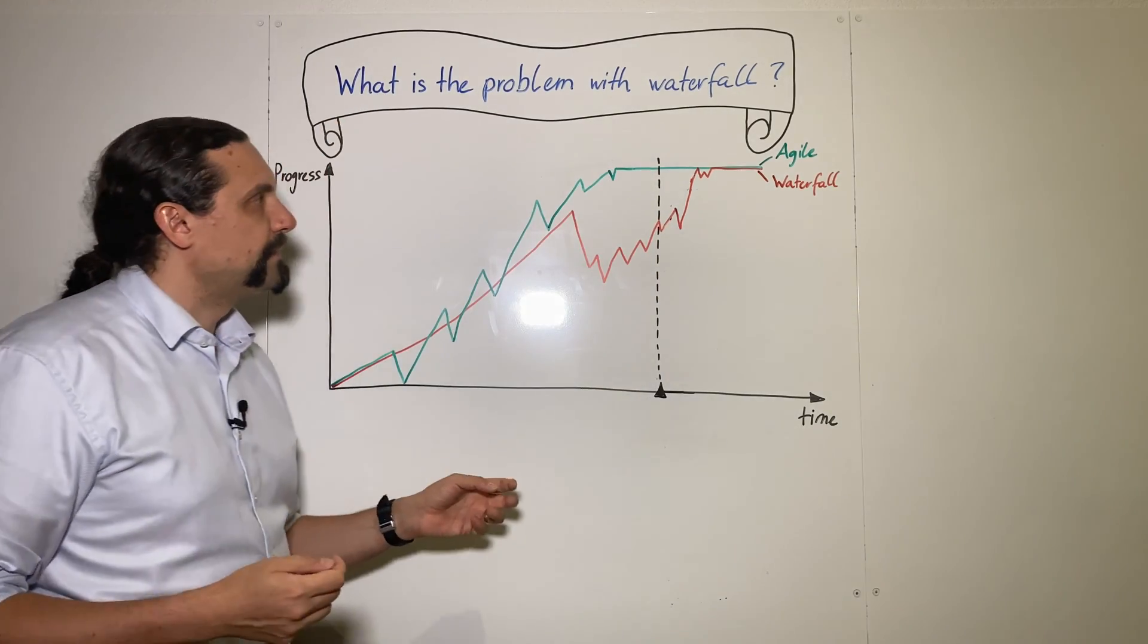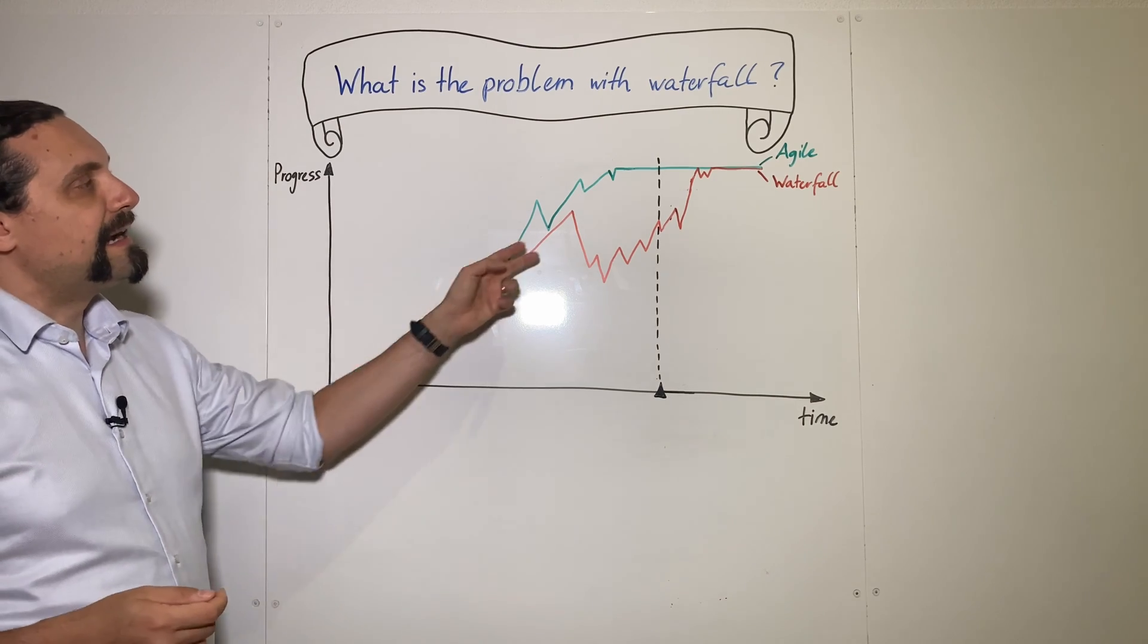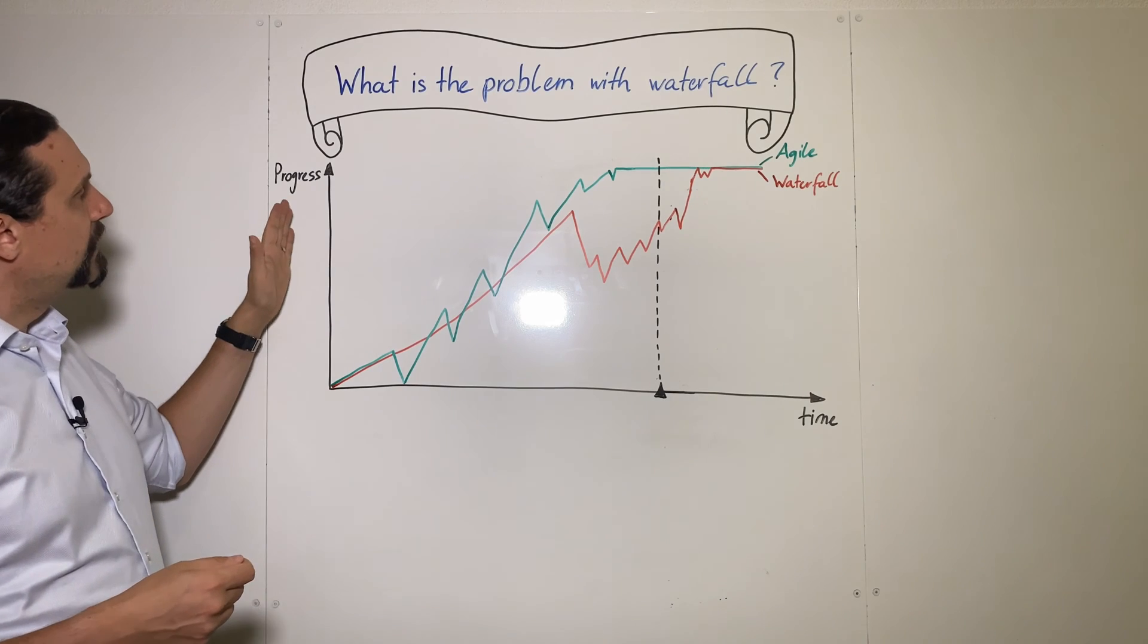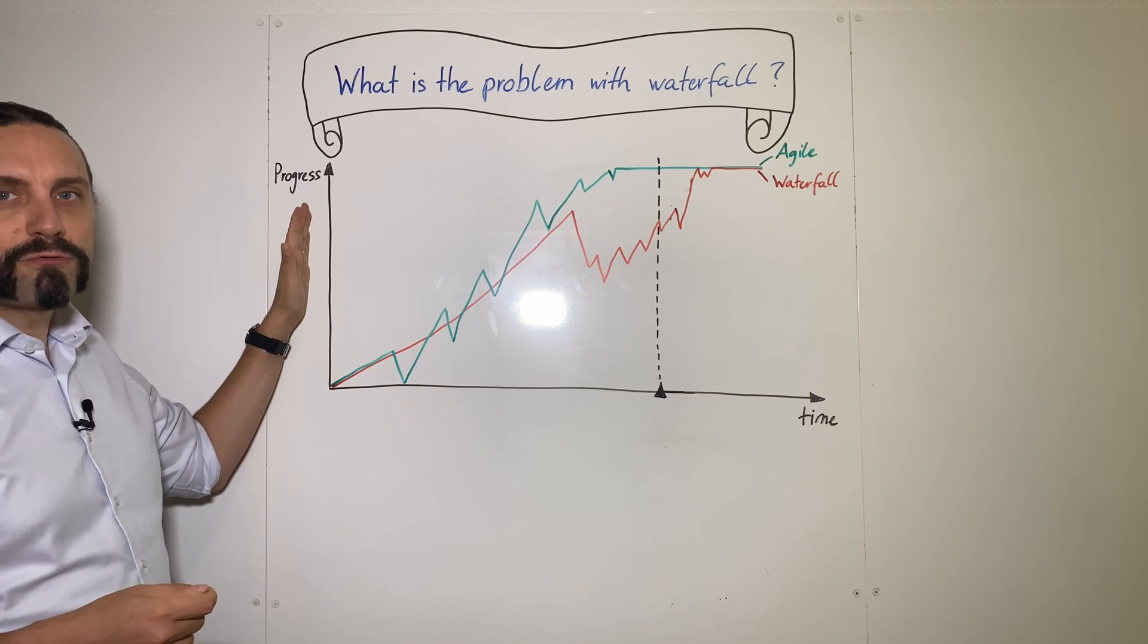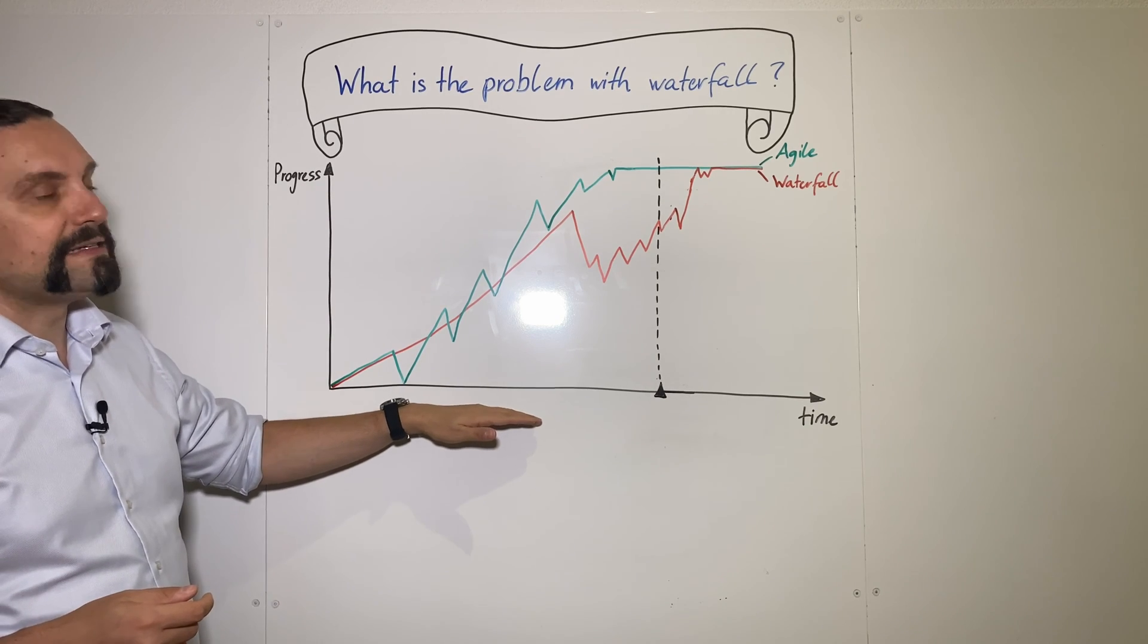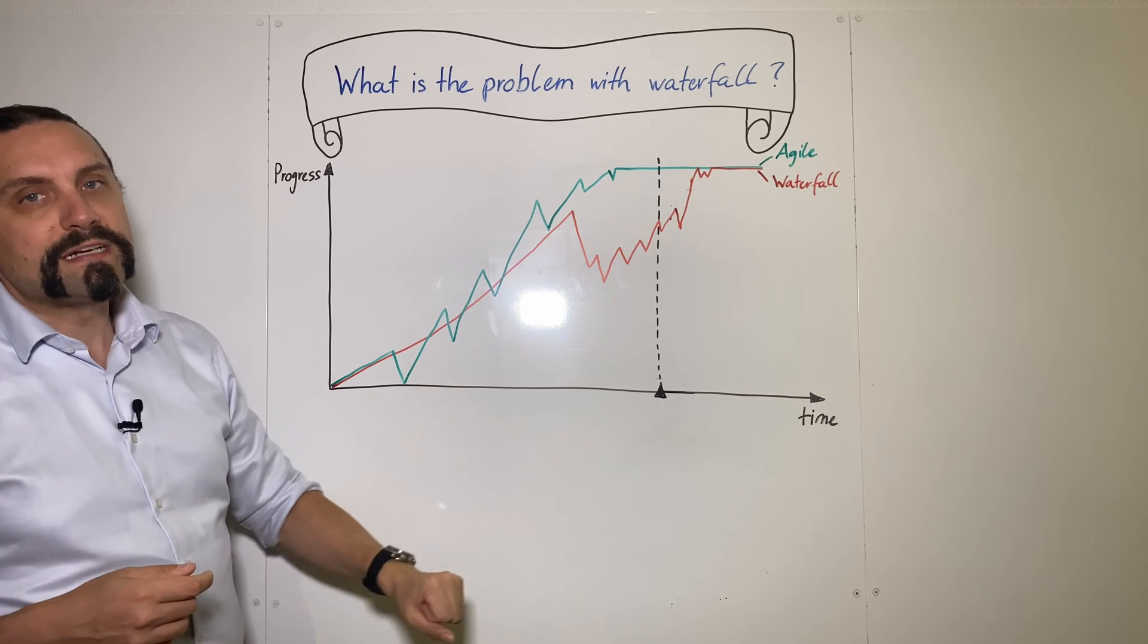Now let's have a look. We can see here a diagram where the red line is the waterfall process and the green line is the agile process. On this axis we see the progress of the project and on this axis we see the timeline. Here we can see where we want to release the software.